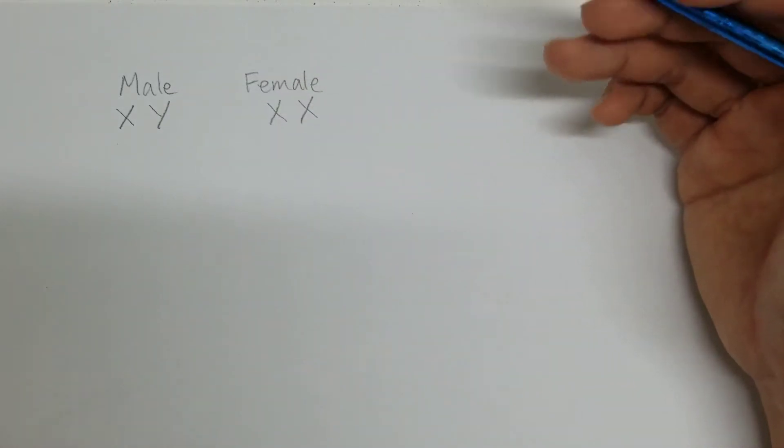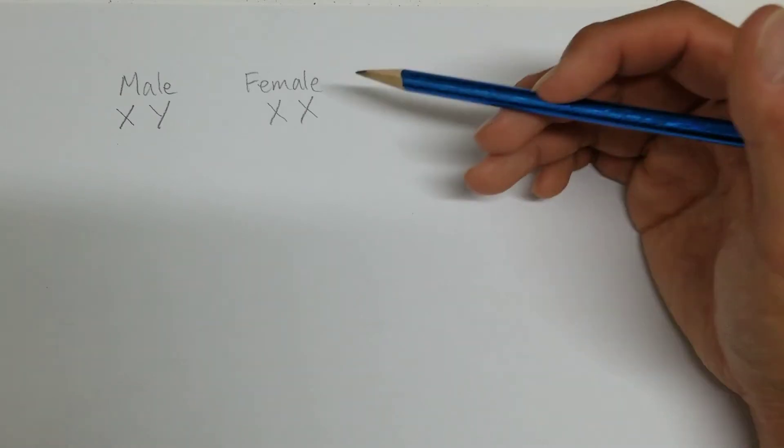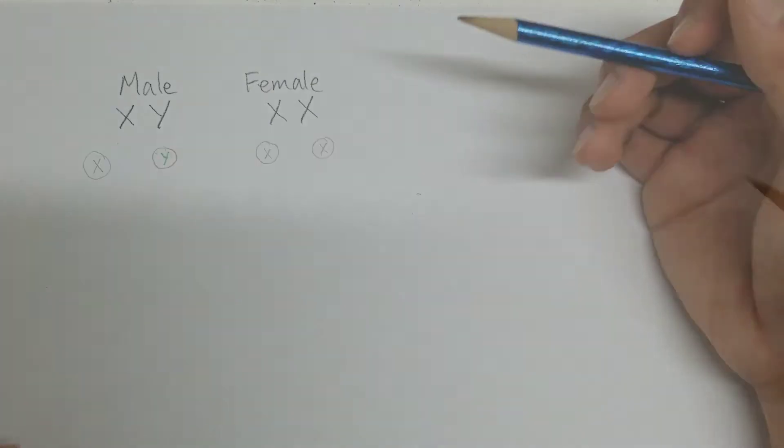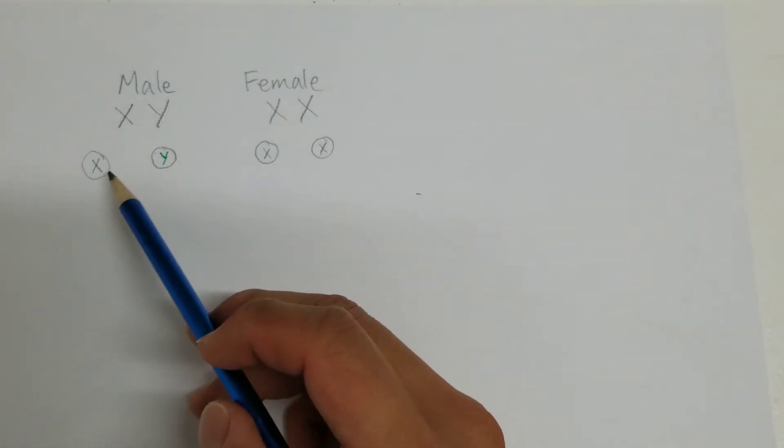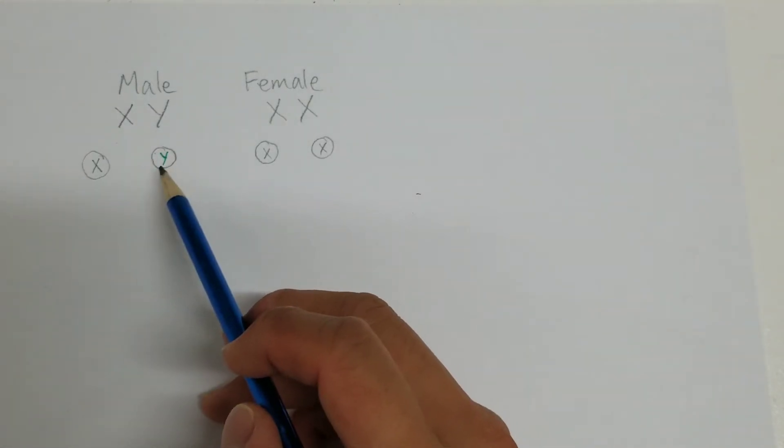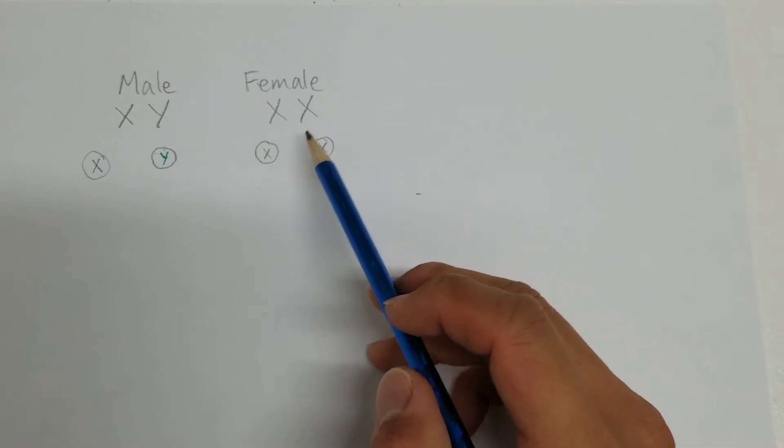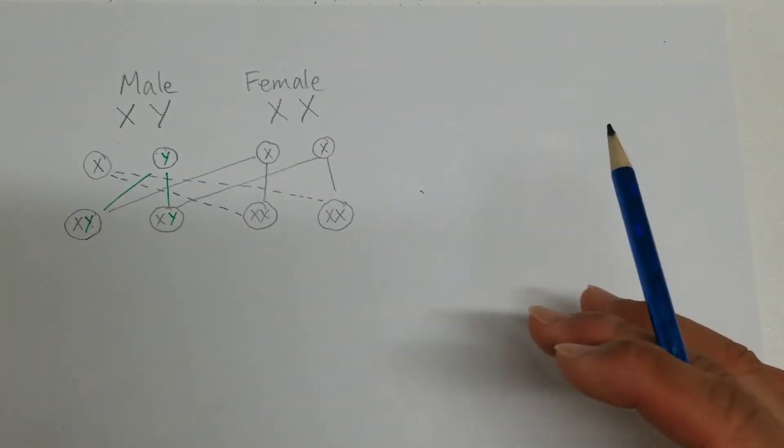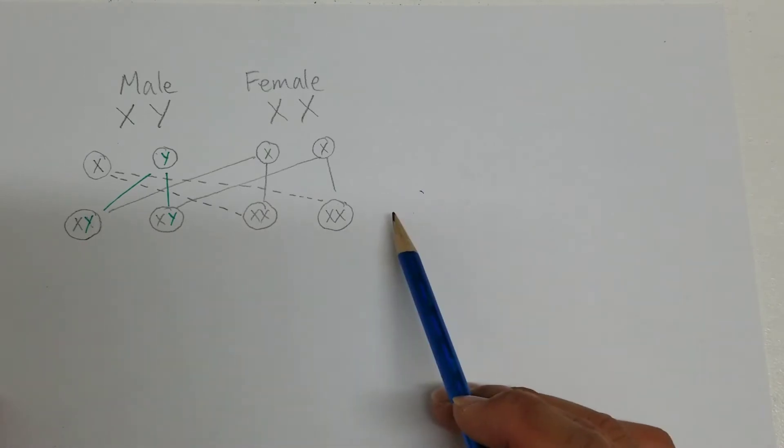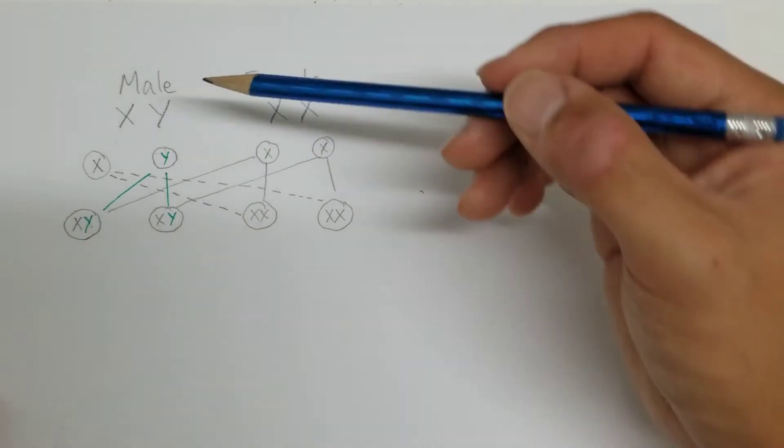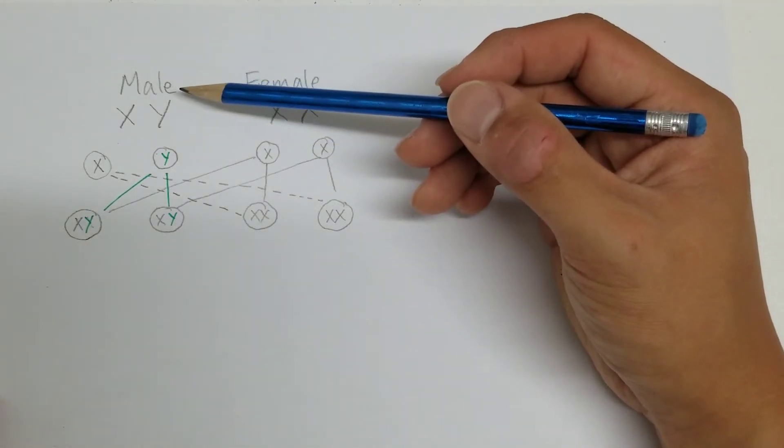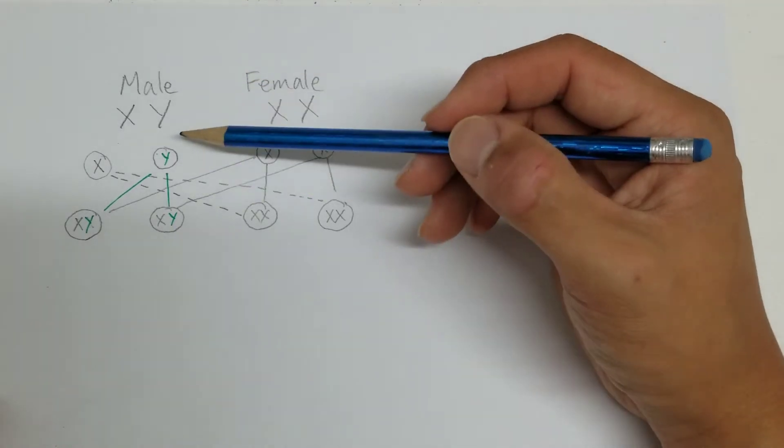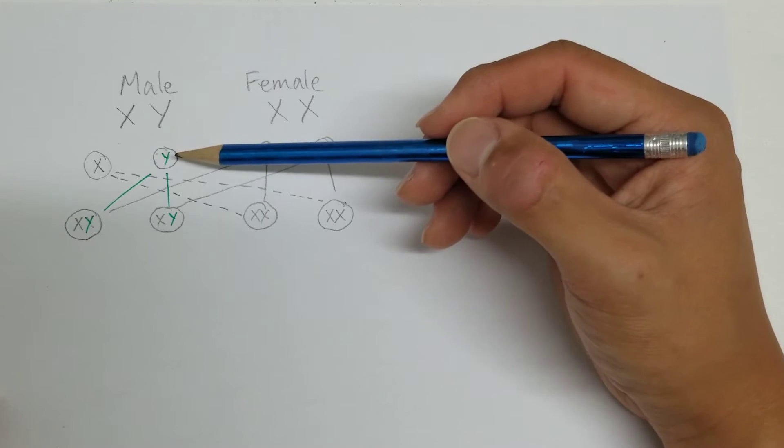Now through meiosis or cell division, these cells are going to divide and become sex cells. So in the case of a male it's going to produce an X sperm and a Y sperm, and in the case of a female it's going to produce two X eggs. Now through fertilization, this is the possible outcomes and you can see the male really determines whether the offspring are going to be male or female because it carries the Y chromosome.